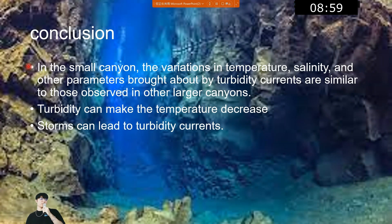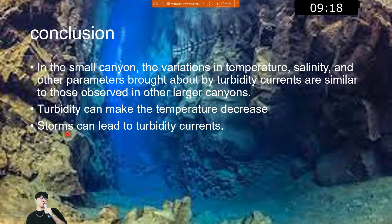In conclusion: first, in a small canyon, the variation in temperature, salinity, and other parameters brought about by turbidity currents are similar to those observed in larger canyons. Second, turbidity can cause the temperature to decrease. Third, storms can lead to turbidity currents.